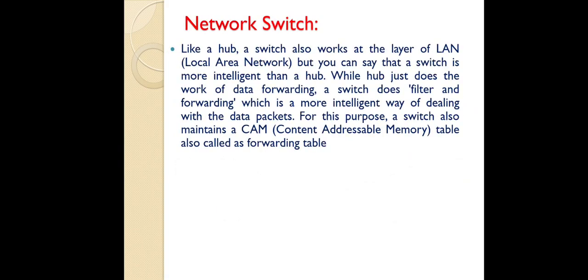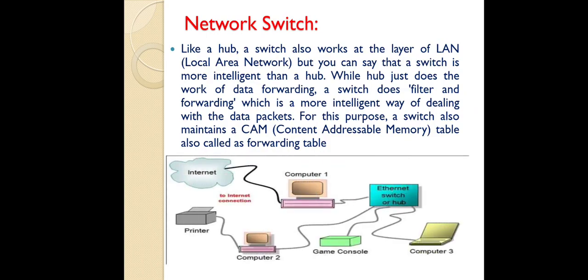The next network device is the network switch. Like a hub, a switch connects devices. But a switch is more intelligent than a hub. A hub just copies the data and transfers it to all computers, but a switch helps in filtering and forwarding the data, which is a more intelligent way of handling data.